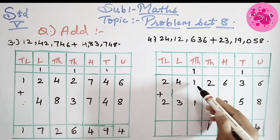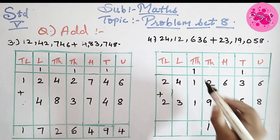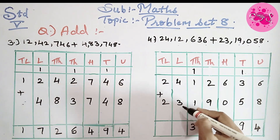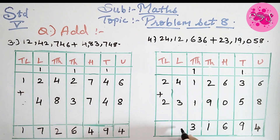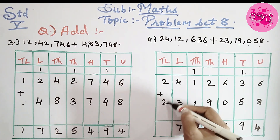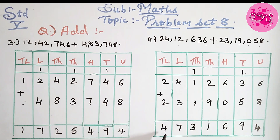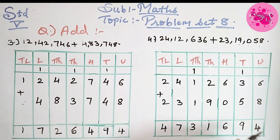Then 1 plus 1 is 2, plus 1 is 3. Write 3 here. 3 plus 4 is 7, write 7 in the answer column. 2 plus 2 is 4, write 4 in the answer column. So the total number we got is 47,31,694.